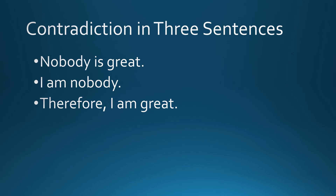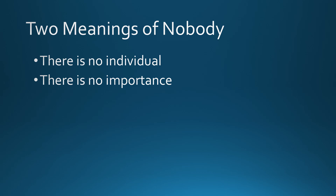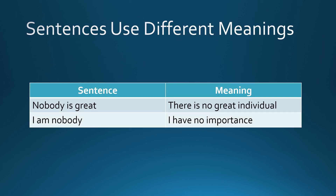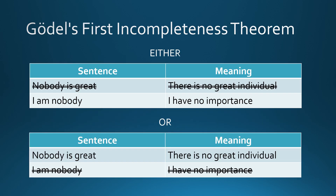Consider the following three sentences: 'Nobody is great,' 'I am nobody,' and 'therefore I am great.' In three sentences we can produce a self-contradiction because 'I am great' is contradictory to 'nobody is great.' This problem arises by giving the word 'nobody' two meanings: one, there is no individual, and two, there is no importance. When we say 'nobody is great' we mean that there is no great individual, but when we say 'I am nobody' we mean that I have no importance.